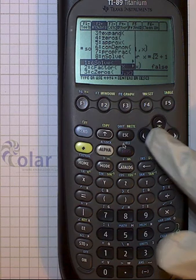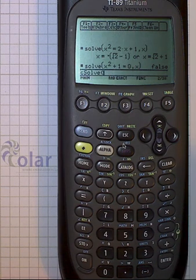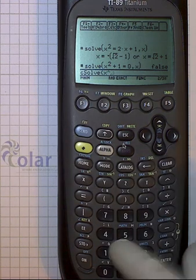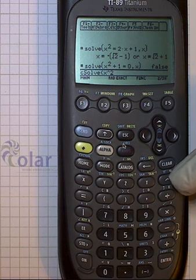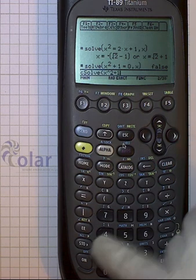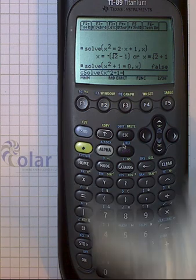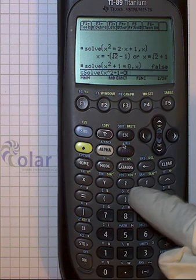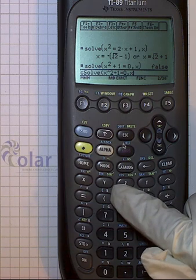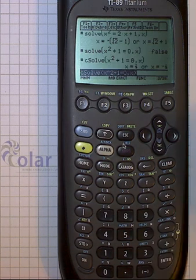And we hit the right arrow here, and then we have C-solve. So we select C-solve, and then now type x squared. By the way, for square or cube, you got to use this button. But yeah, x squared plus 1, and then equals 0, and then comma x. So the syntax for C-solve is the same as the syntax for solve. And then close parentheses, hit enter.